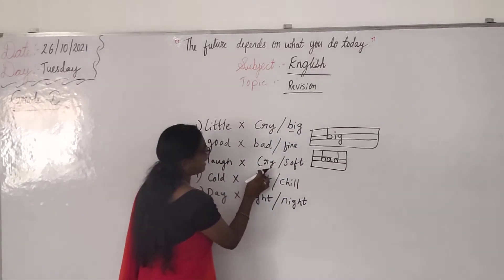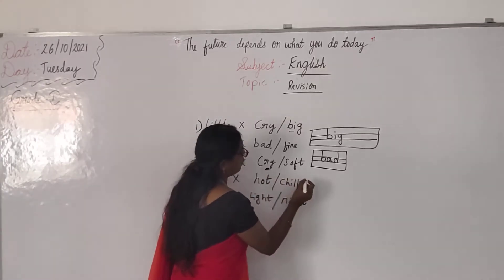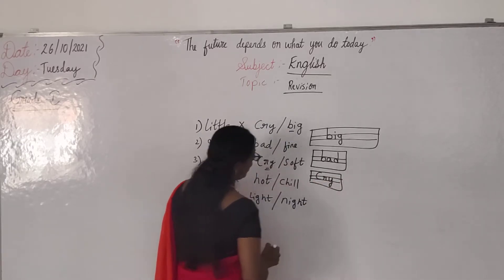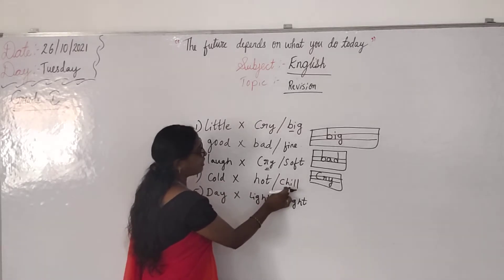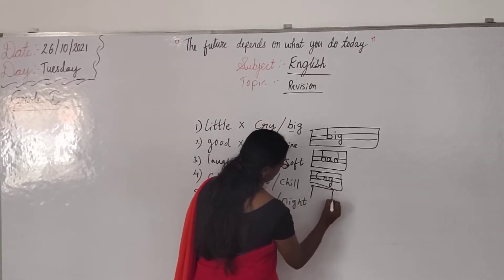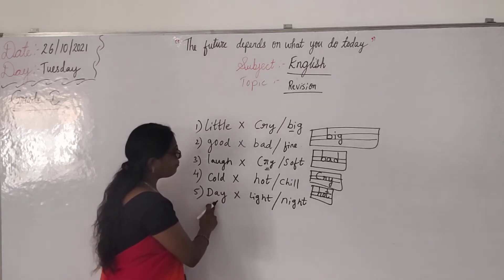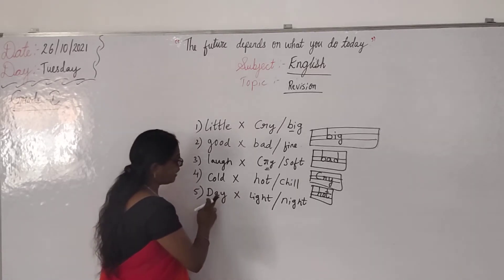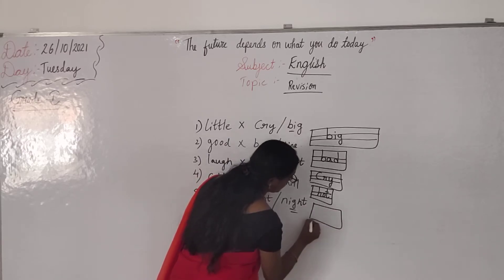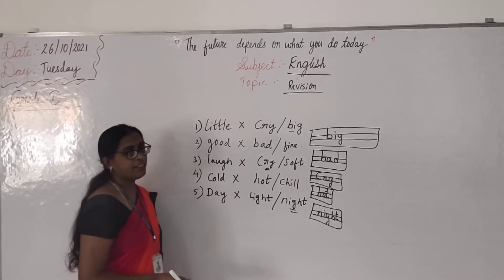Then laugh — the opposite is cry. C-R-Y. Then cold — the opposite is hot, not chill. Then day — the opposite is night, not light. N-I-G-H-T. You have to choose the correct opposite and write it in the space below.